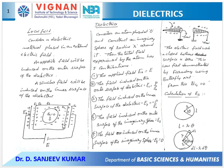I am considering an imaginary sphere around the atom at point O, and I want to calculate the total field experienced by this atom. There will be 5 contributions. One is the applied field, denoted as E₀, which is equal to E.